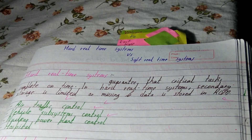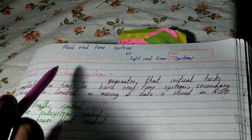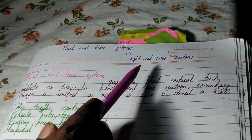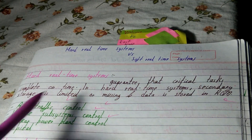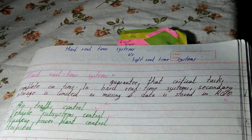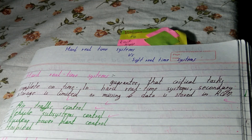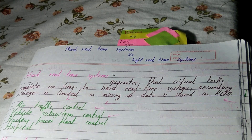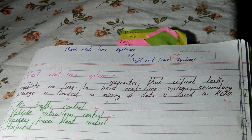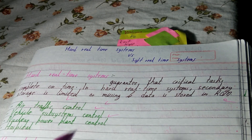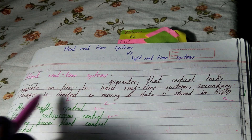In this video, I'll be covering hard real-time systems versus soft real-time systems. Hard real-time systems guarantee that critical tasks complete within a specific time. They basically assure that a particular task will be completed within a particular time stamp or time slot.